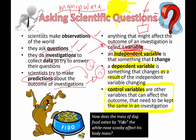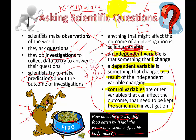Here's a question: 'How does the mass of dog food eaten by Fido affect his body mass?' Can you figure out what is the independent variable, the dependent variable, and what are some things you need to keep controlled? The thing that I'm controlling — changing — in this experiment is the mass of dog food. That's the independent variable. His body mass depends on the mass of dog food, so body mass is the dependent variable.